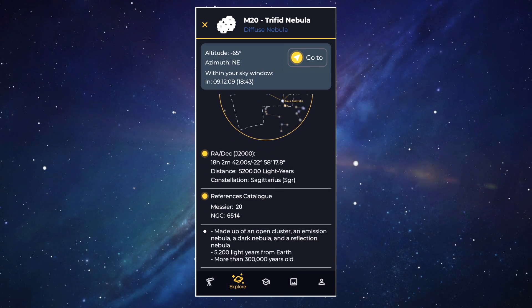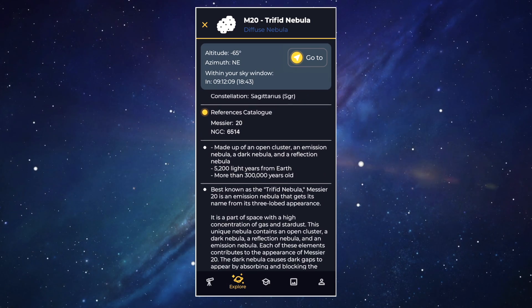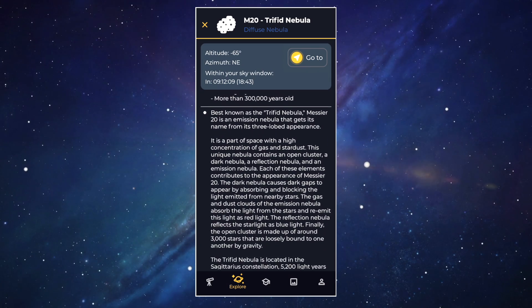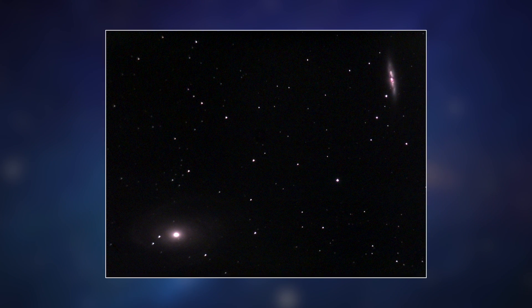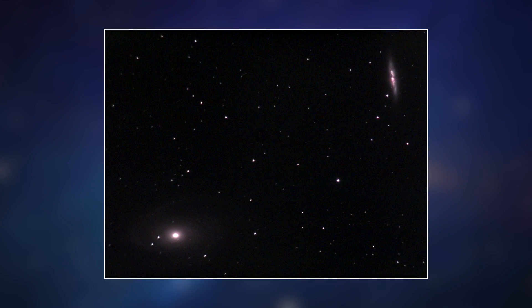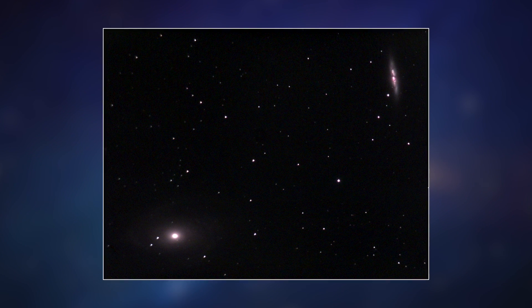It really gives you all the details: location, constellations, age, size. You have everything you need to know about the object you're looking at. This is really handy. The EVscope 2 now has a wider field of view and it allows you to get these two galaxies in the same image.